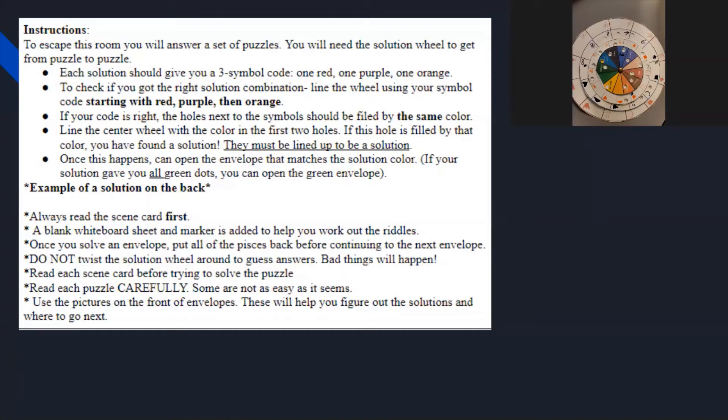To begin this game we will receive a main story card. This card will explain the story and then instruct you to read the instructions card. The instructions card will explain that each solution will give you a three code symbol: one red, one purple, and one orange.